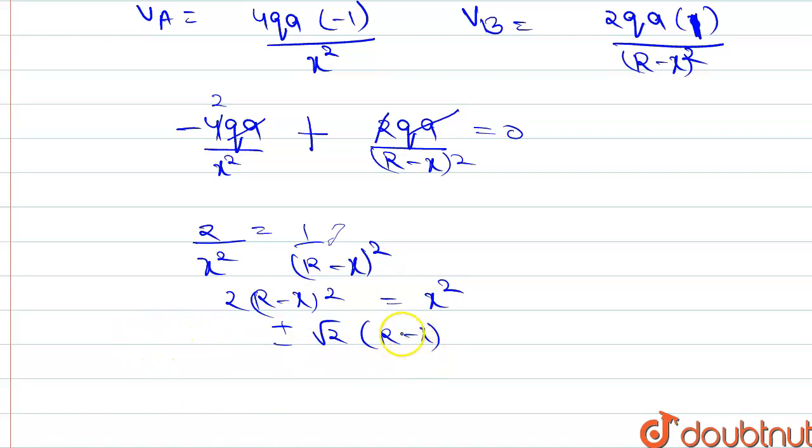We take the square root on both sides, then plus or minus root 2 times (r minus x) equals x. We have two equations now for x.